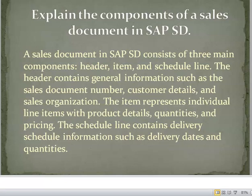Explain the components of a Sales document in SAP S.D. Answer: A Sales document in SAP S.D. consists of three main components: header, items, and schedule line. The header contains general information such as the sales document number, customer details, and sales organization. The item represents individual line items with product details, quantities, and pricing. The schedule line contains delivery schedule information such as delivery dates and quantities.